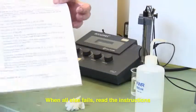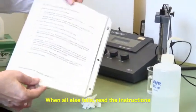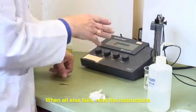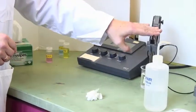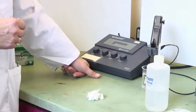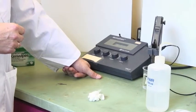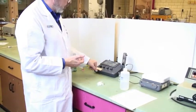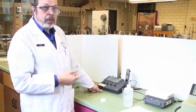If you forget, instructions for standardizing the pH meter are always nearby. To read pH, place your solution under the electrode, turn to pH mode, and read the display.